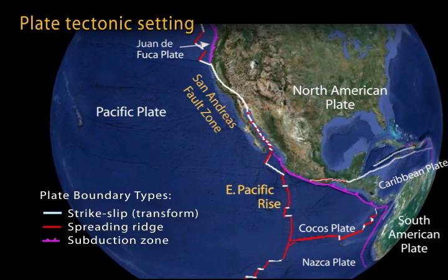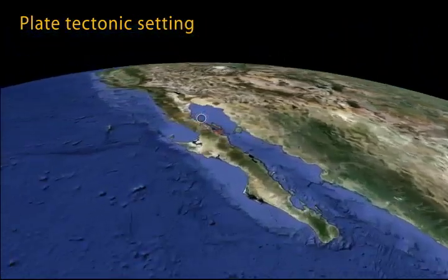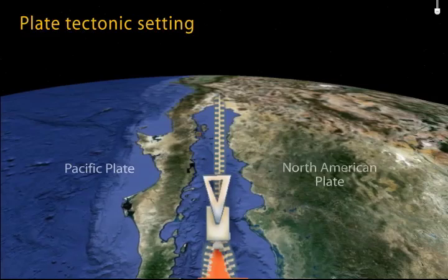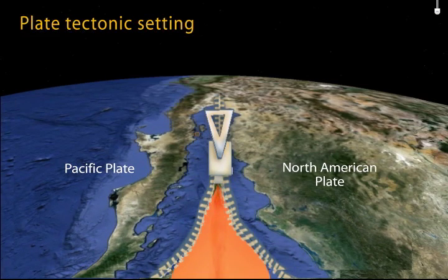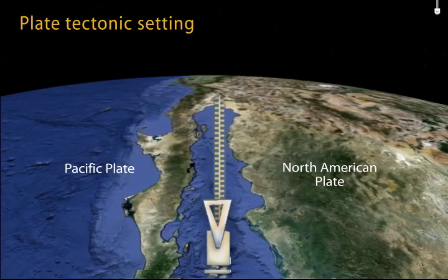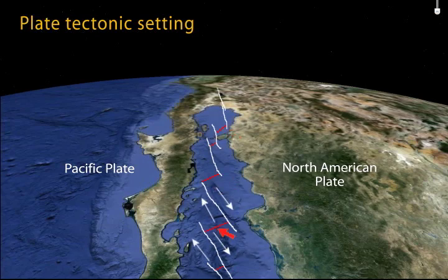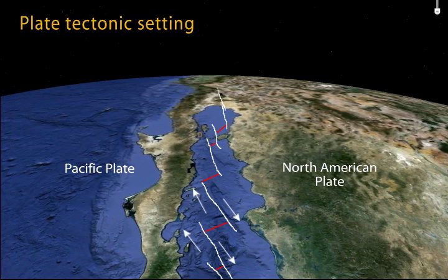Extension and strike-slip faulting are causing Baja California to separate away from mainland Mexico, thereby opening the Gulf of California as though it were being unzipped. In reality, the waters of the Gulf hide connecting stair-stepping seafloor spreading ridges with right-lateral strike-slip motion on classic transform faults. This collection of faults and ridges forms a continental rift system that is tearing the Pacific plate apart from the North American plate.